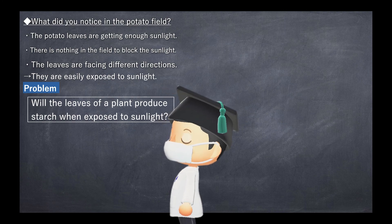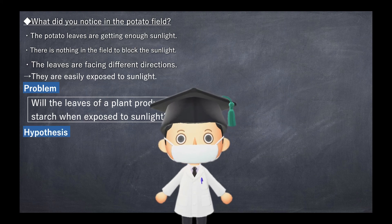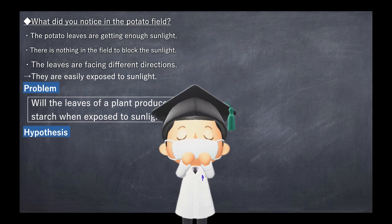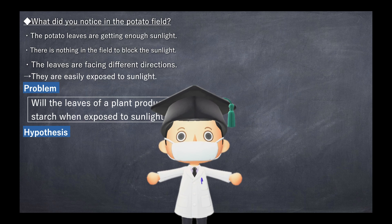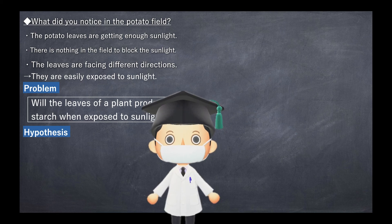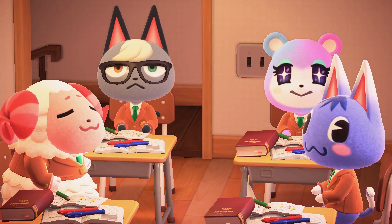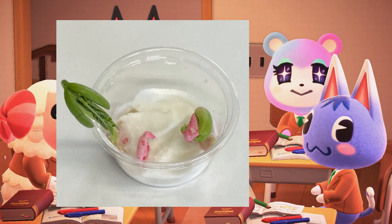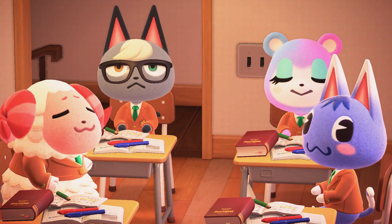Let's make this a problem: will the leaves of a plant produce starch when exposed to sunlight? Now let's make a hypothesis and listen to their opinions. Germination requires starch in the seeds, after which it grows, so I think starch will be formed on the leaves exposed to sunlight.